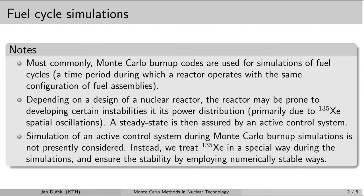We do not want to see any oscillations of the power distribution or xenon distribution in our Monte Carlo burn-up simulations. That's not because they are not real — they are real — nevertheless they are damped down during the operation of the nuclear reactor. The operators in the control rooms, when they see that xenon oscillation starts to develop, use control rods to damp down the oscillation. However, it would not be very practical for us to program special logic into the burn-up simulator to control the position of control rods to stabilize the xenon oscillation.